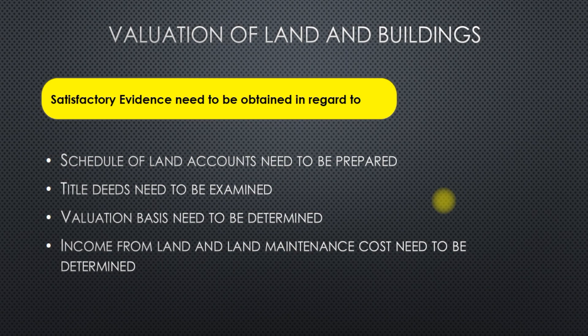The auditor should get a certificate from the mortgagee regarding possession of title deeds and the loan amount of the property being mortgaged. A certificate from the banker is needed if the title deeds are deposited with them for safe custody. The auditor should also visit the property and premises that belong to the client for inspection purposes. A certificate needs to be obtained from the legal advisor of the client.